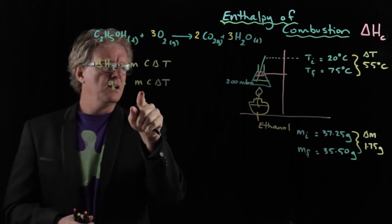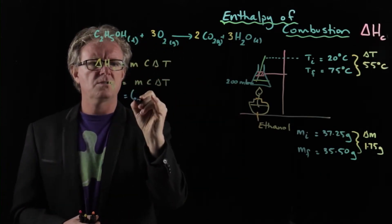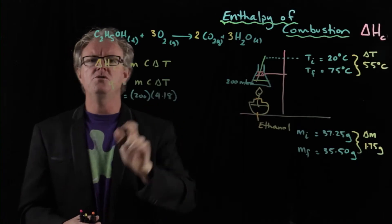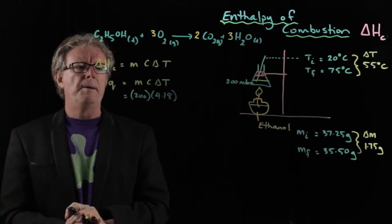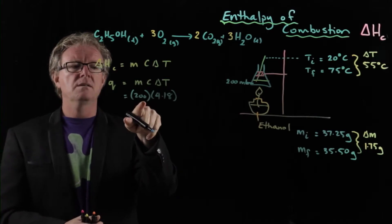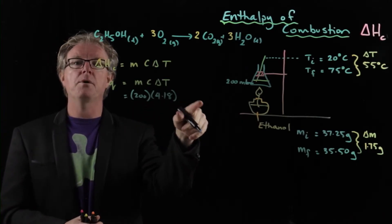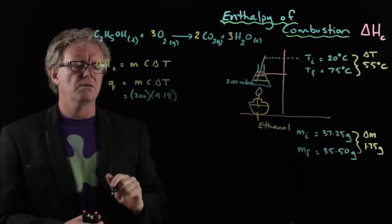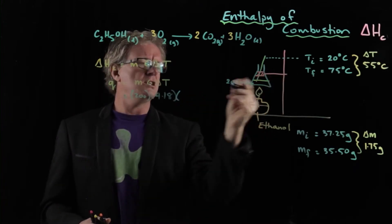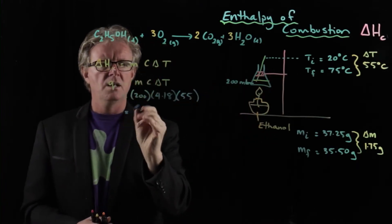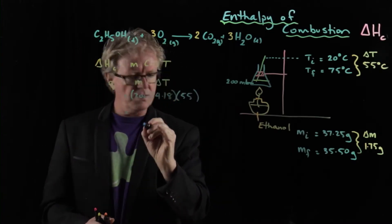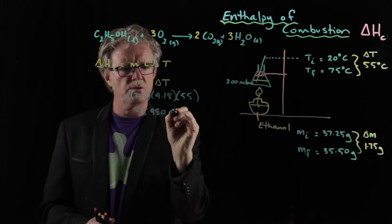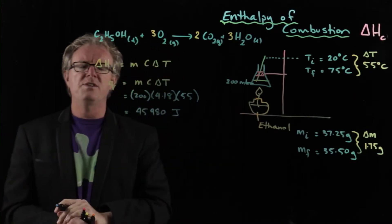So let's throw some values in there. The mass that we're talking about is the mass of water, so it's 200. Then the specific heat capacity of water, which is 4.18. Now the value you use here will depend upon the units of the other values. I'm using grams here, so this is 4.18 joules per gram per kelvin. If you're using kilograms, you've got to convert that to liters. But I'm using grams. And we had a temperature change of 55. So you throw that in your calculator and you should end up with 45,980 joules.